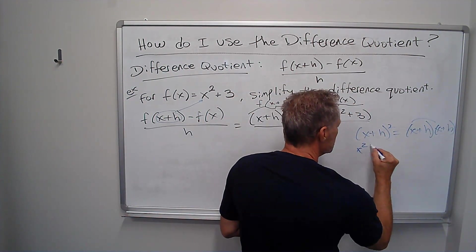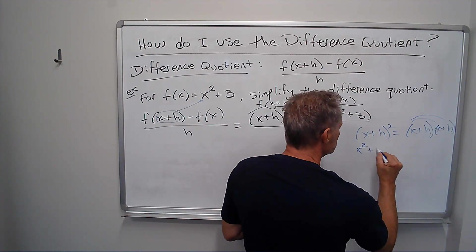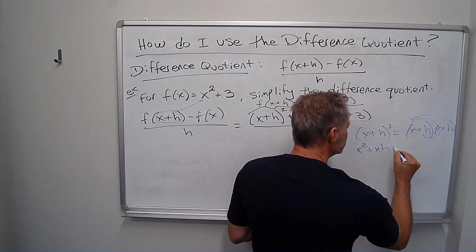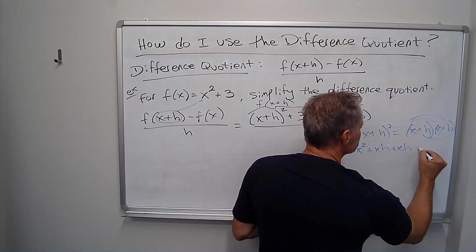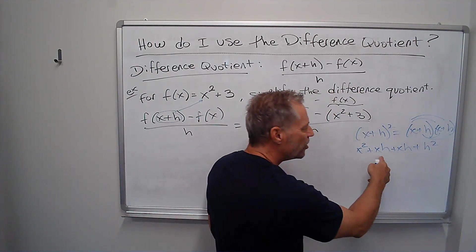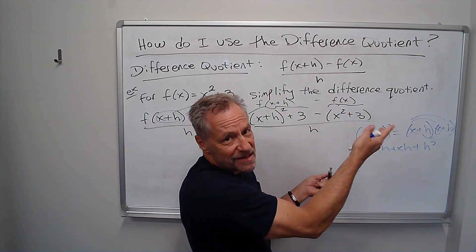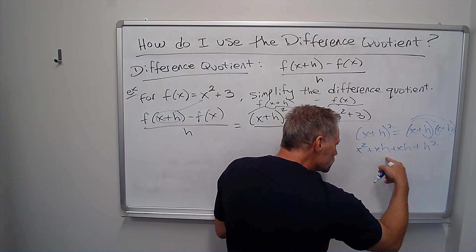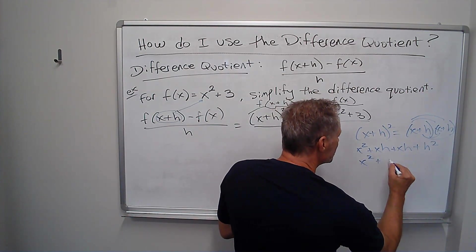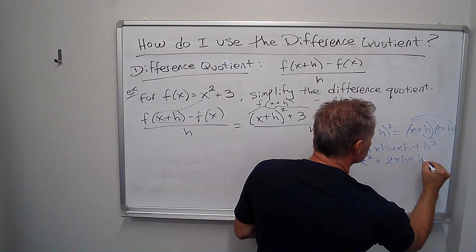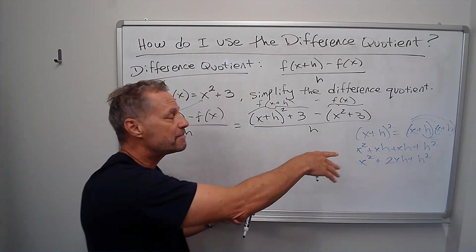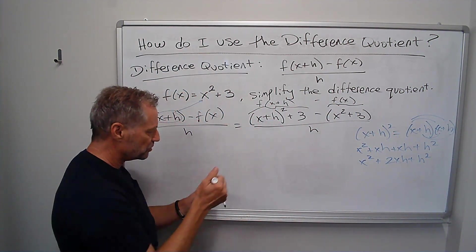So I'm going to go x squared plus xh plus another xh plus h squared. And if you want to call those hx instead of xh, it doesn't matter. But those are alike, so I can add those together. I get x squared plus 2xh plus h squared. That's what this piece multiplies out to.